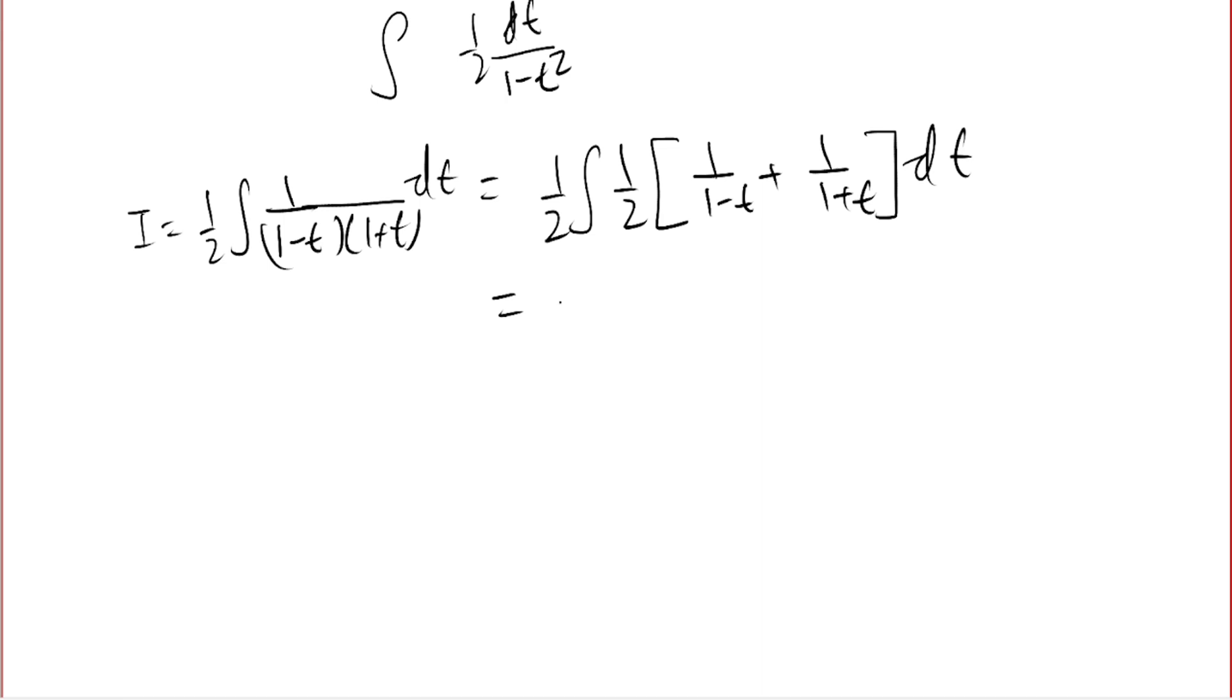And if you integrate this, you get 1 over 2 integral 1 by 1 plus t dt.